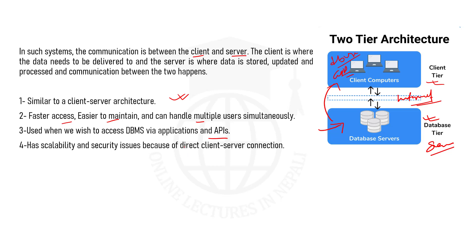DBMS is accessed via the database management system, but there are scalability and security issues as negative aspects of two-tier architecture. Because of the direct client-server connection, as the number of clients increases, the load on the server increases and performance decreases. Also, the direct connection between client and server makes this architecture vulnerable to security risks. If there are any queries or issues, please comment down below. Thank you.